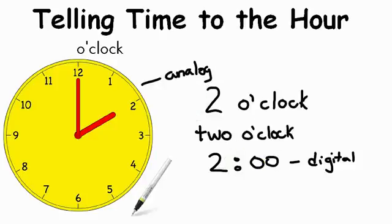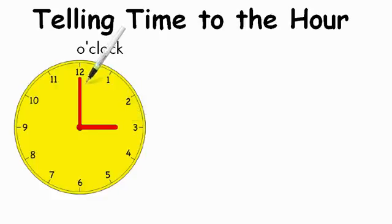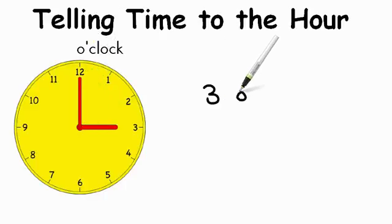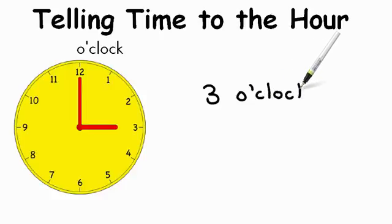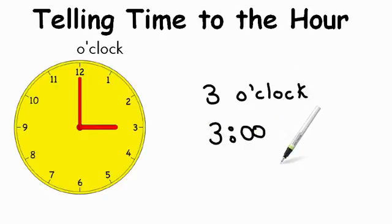All right, so let's practice telling some time. Can you tell me what time the clock says right now? Remember the rules: start with your smaller hand, the hour hand, and then check the minute hand. So what does our hour say? It's on the three. And the minute hand is on the twelve, or o'clock. So it's three o'clock. If we were going to write it digitally, we would write three o'clock like that — three, zero, zero. Great job. Let's try another.